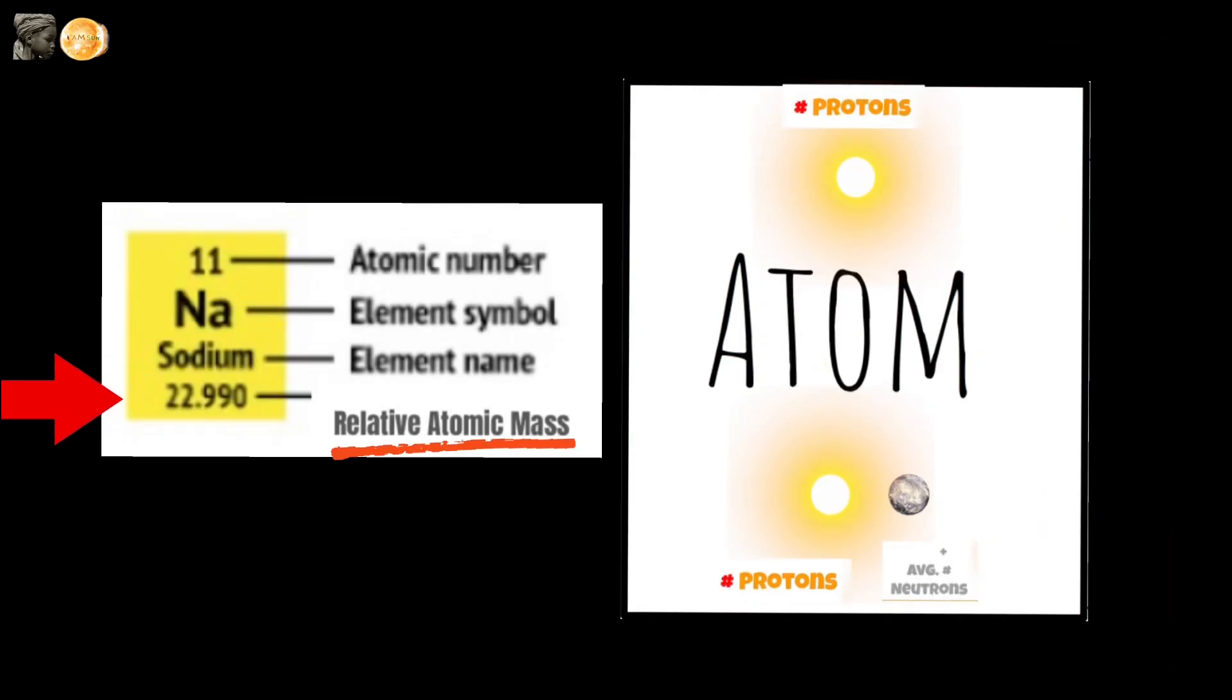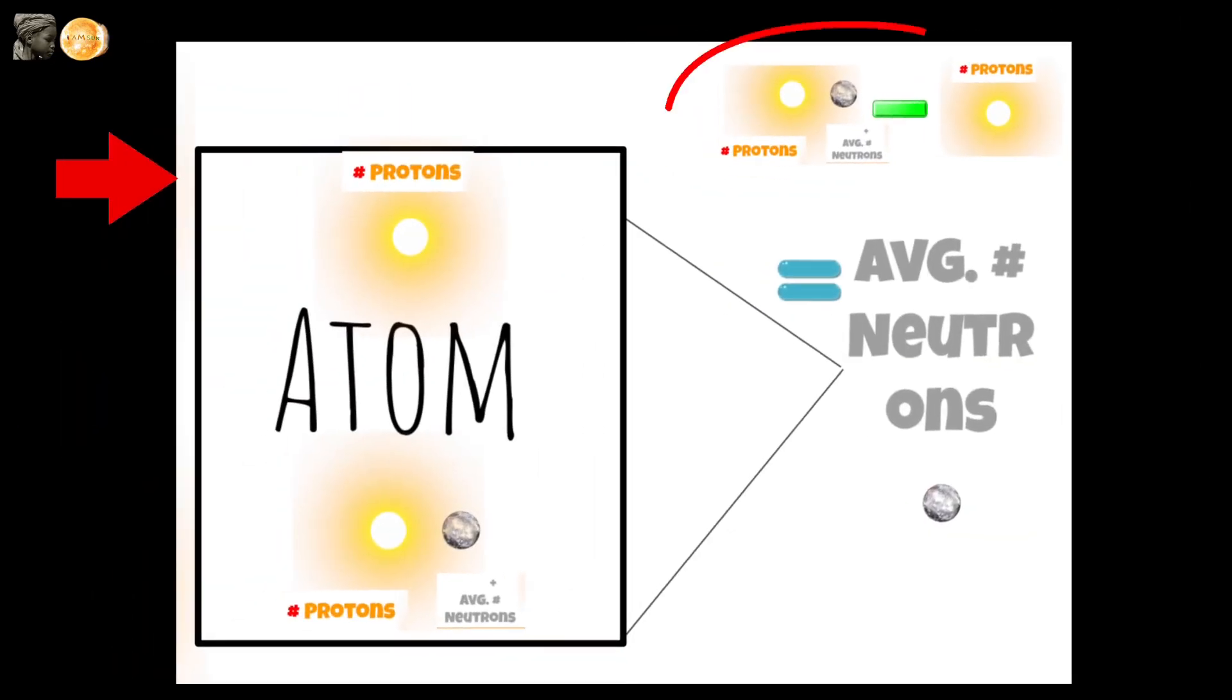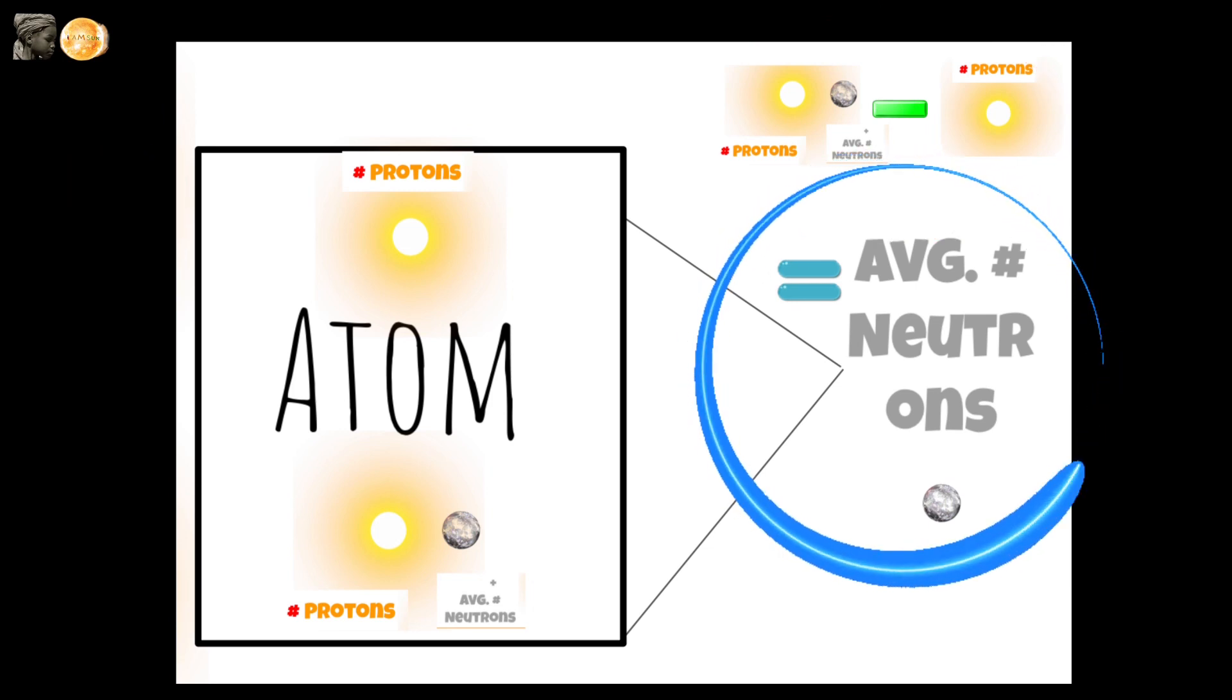Here's where you find the relative atomic mass of an atom. See, if you subtract the atomic number from it, you'll get the average number of neutrons in that atom.